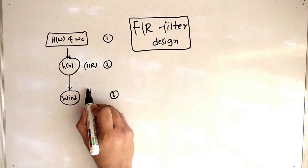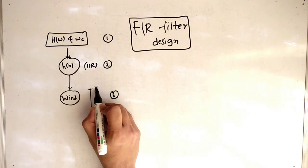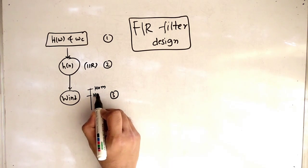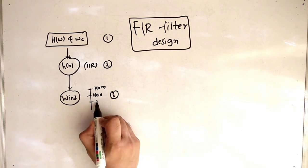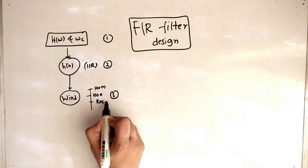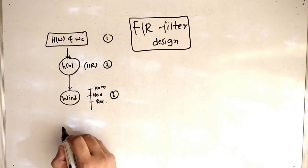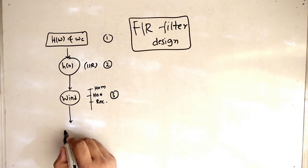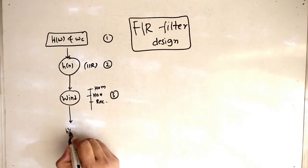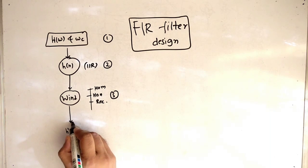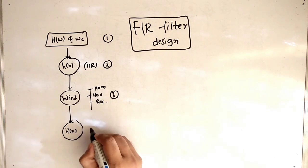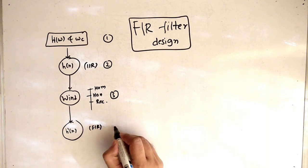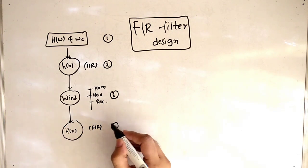The window types are: Hamming, Hanning, and Rectangular. The fourth step is the final answer H dash of N, which is the finite impulse response. So these are the four basic steps for any filter design.